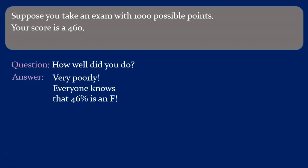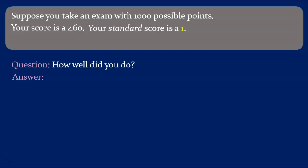Suppose you take an exam with a thousand possible points. Your score is a 460. How well did you do? Here's one possible answer: very poorly. Everyone knows that 46% is an F, right? Wrong. We know nothing whatsoever about the distribution of scores on this exam, so we can't say anything yet about how well you did. 460 might be the best score anyone has ever received, or it might be the worst. Well, suppose we add a little information. Your standard score is a 1. Now we can say something. You did quite well. A full standard deviation above the mean.